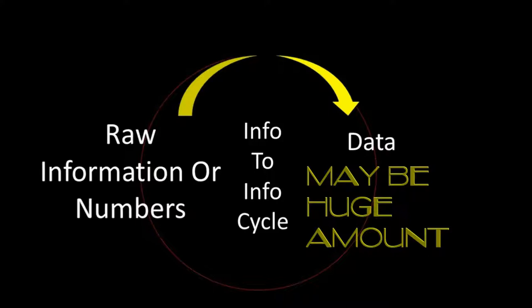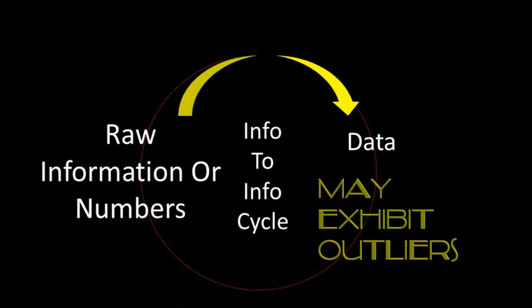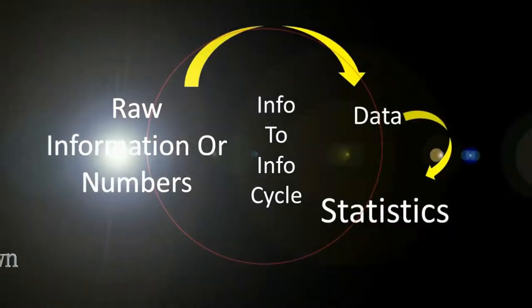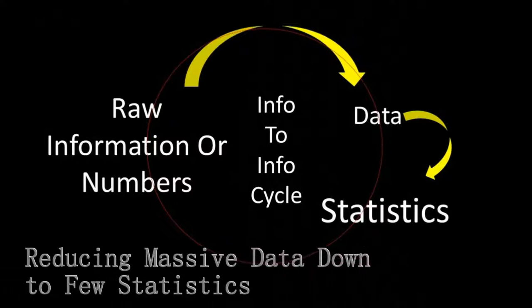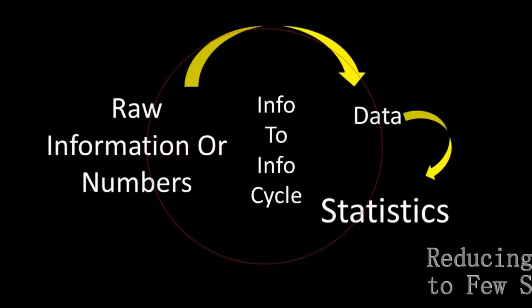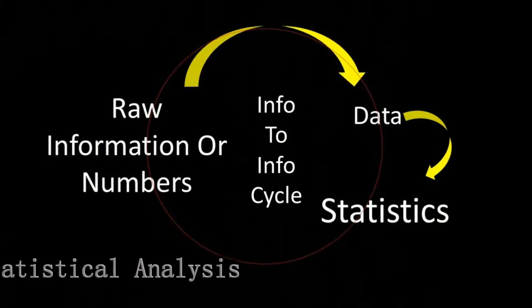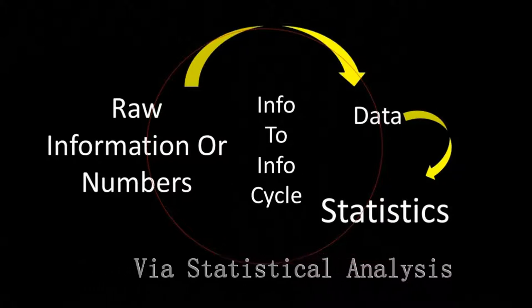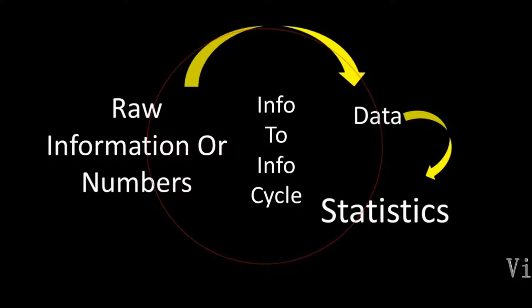Data can be huge, can be large, and data can exhibit some odd values or outliers. To complete the Info-to-Info Cycle, we have to convert data into statistics. Statistics means reducing the massive amount of data down to a few statistics, measures, or parameters that can describe the entire population. This happens via statistical analysis.